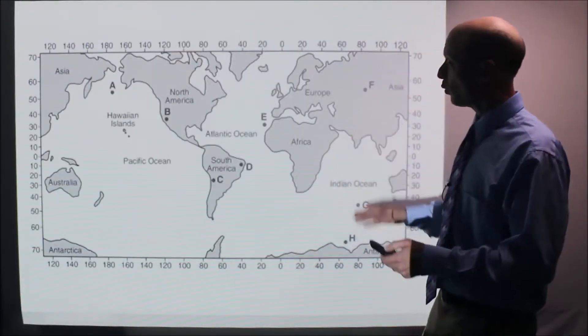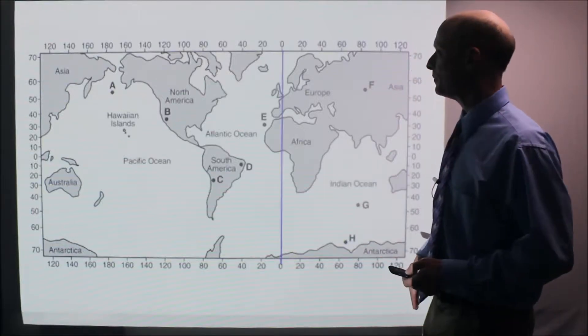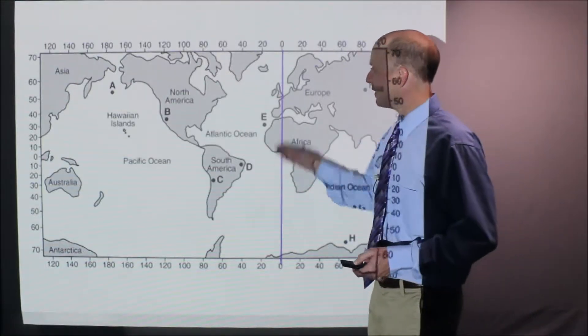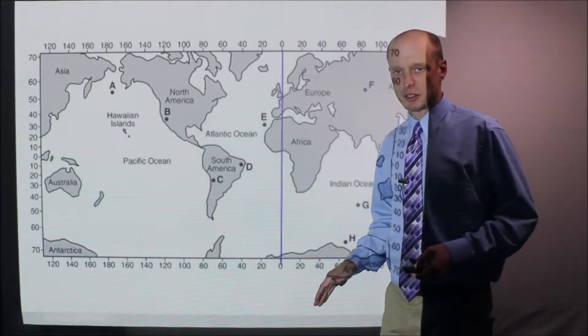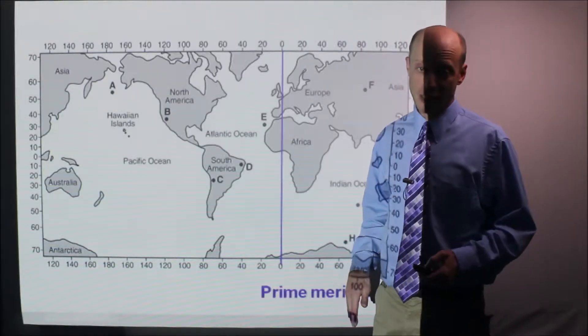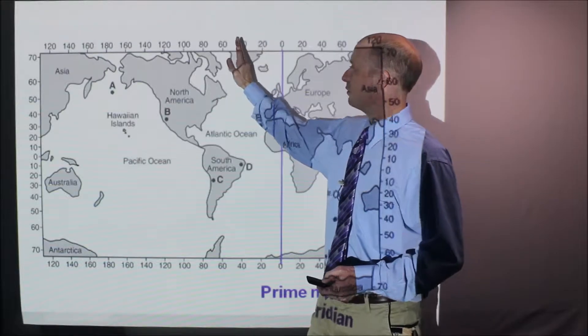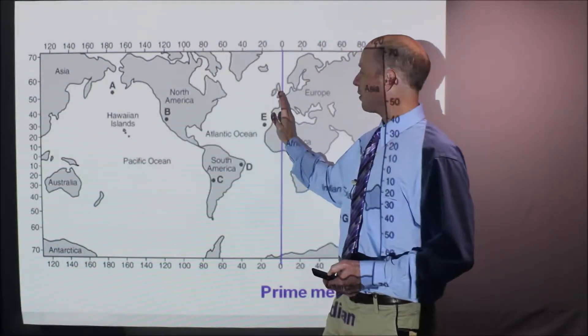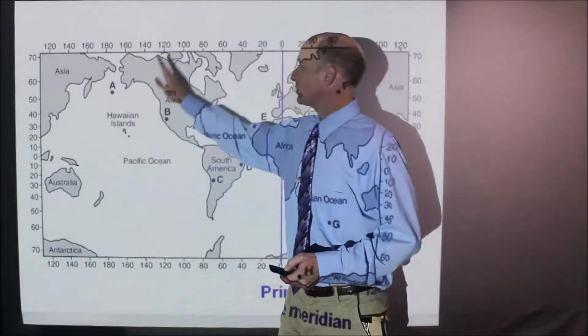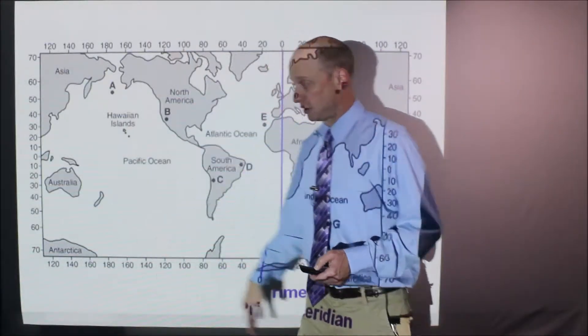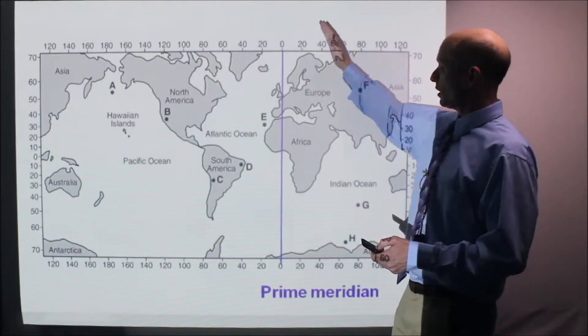Oftentimes it gets presented like this. Here's a world map or most of a world map. Here in purple we have zero longitude. That's called the prime meridian. So all of these numbers, 20 longitude, 40, 60, 80, these are all west. So that's a hundred degrees west longitude. These are all east, all of these numbers here.